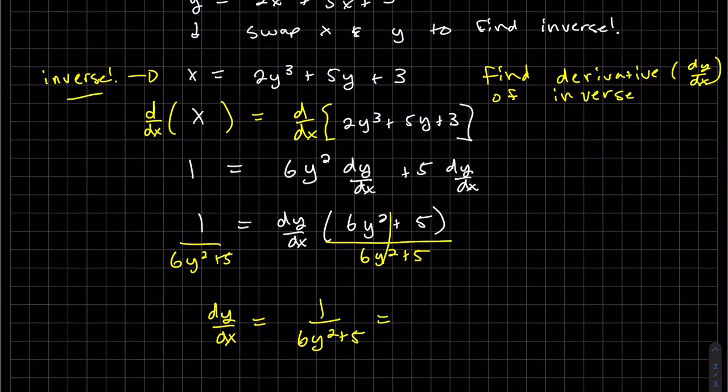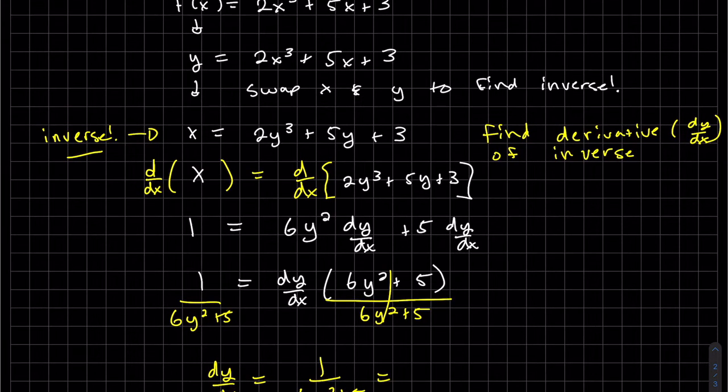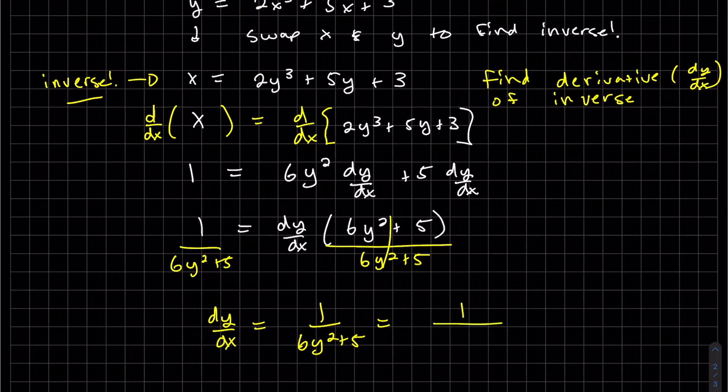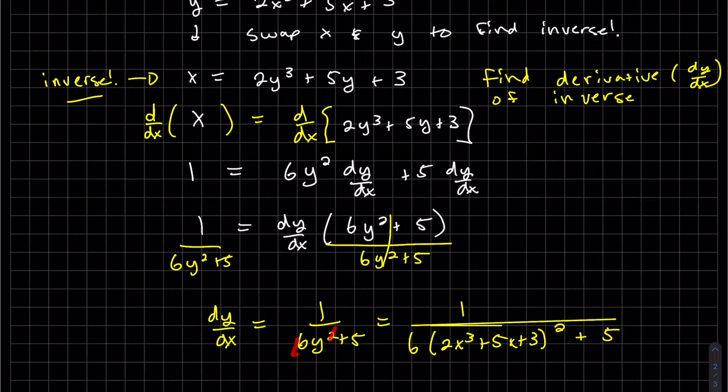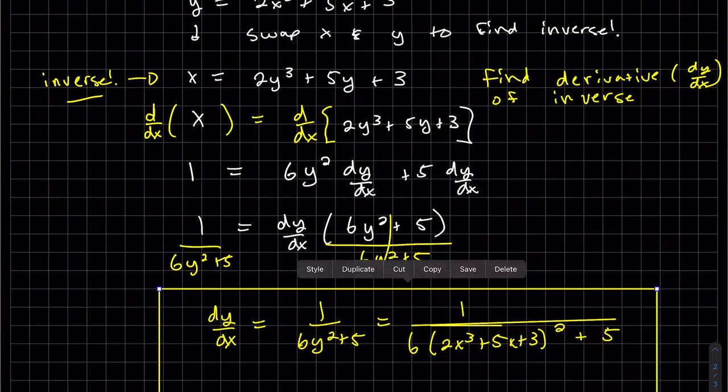And we started out with x's. I think we can put it back in terms of x. This is y. So just plug in y. Six y squared plus five. And this is my y. That's it. That's how you use the formula. We didn't even use the formula.